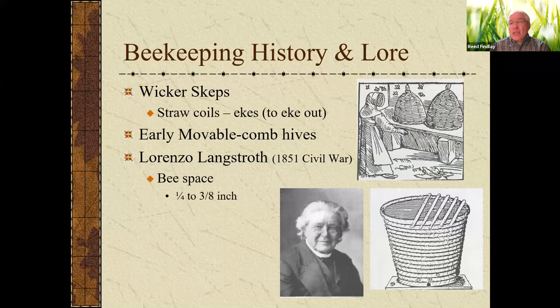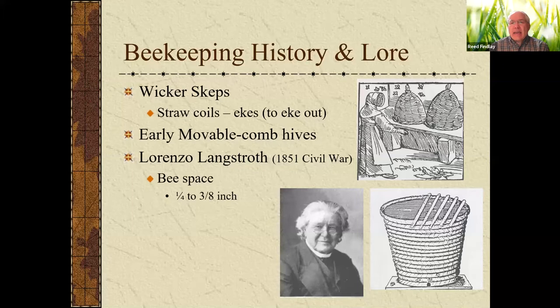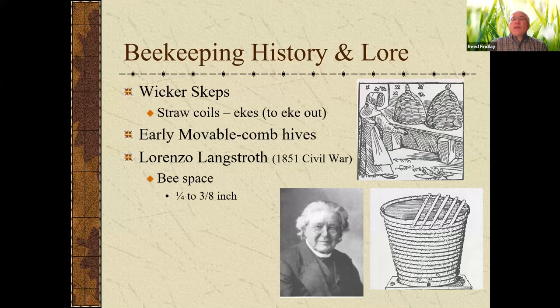Skeps were hard to keep bees in because you couldn't get the honey out or check the bees without cutting through the comb and destroying a lot of the work the bees had put together. It was hard to medicate them and almost impossible to find the queen bee. They first started inverting the baskets and having comb hives from little sticks laid across the top. But then during the Civil War, there was a Catholic priest by the name of Lorenzo Langstroth who really studied bees.